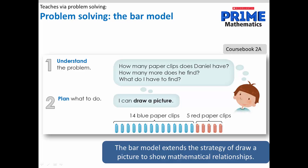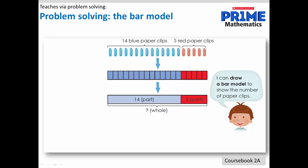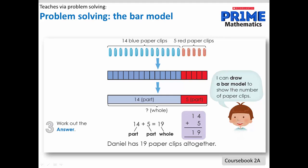In this problem, because the two parts in the problem are in the same set, paperclips, the bars are drawn side by side. What the students know is that there are two parts in this problem: fourteen blue paperclips, and five red paperclips. What is unknown is the whole number of paperclips. And notice that along with the pictorial representation using the bar model, the number sentence and algorithm are also shown. That's the concrete pictorial abstract approach in use.